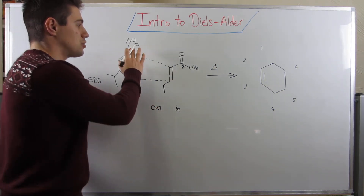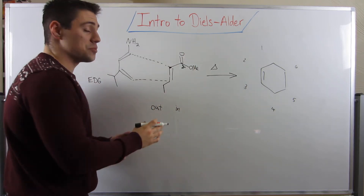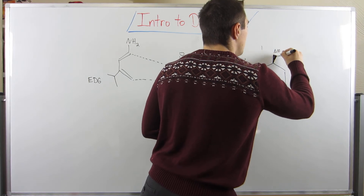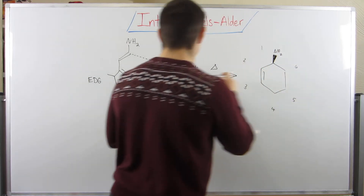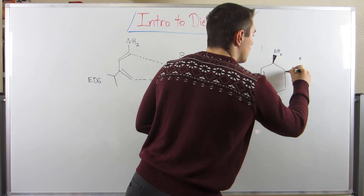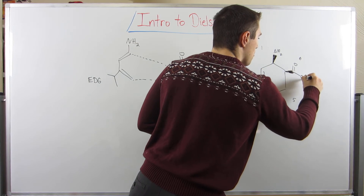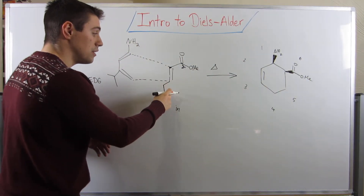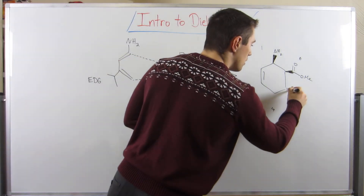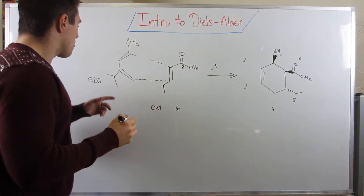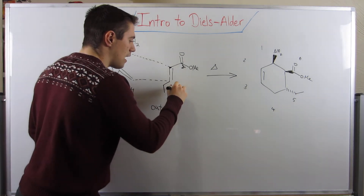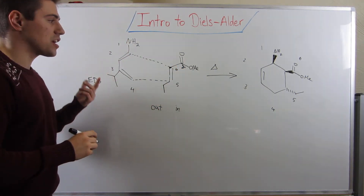Let's pick the NH2 and make our out-groups wedges. I'll wedge my NH2 group at position number one. I'll wedge my ester at position six. At position five, this ethyl group is an in-group because he's going towards the pocket, so he's a dash. At position three we have this isopropyl group.